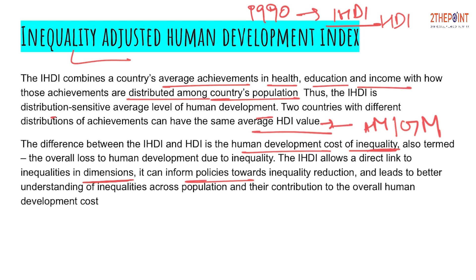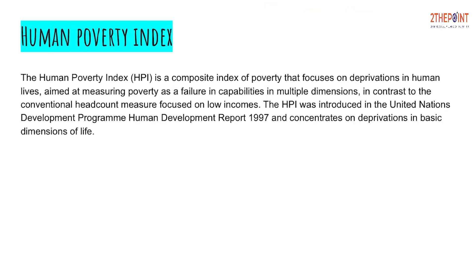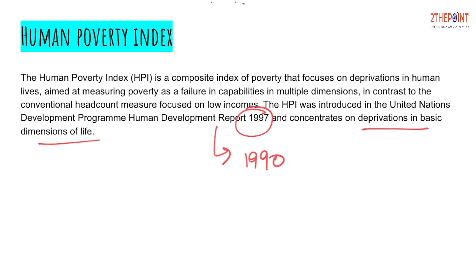The next index is the Human Poverty Index, which focuses on the poverty dimension and deprivations that a human faces in the course of life. It is again developed by the United Nations Development Programme and was made part of the Human Development Report in 1997, whereas the Human Development Report itself was developed in 1990. It concentrates on deprivation in basic dimensions of life. Later, this Human Poverty Index was absorbed into the Multidimensional Poverty Index.